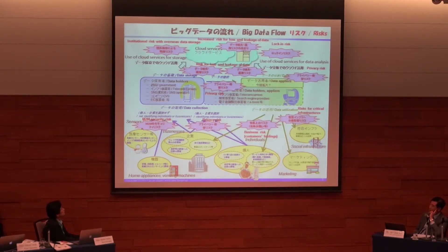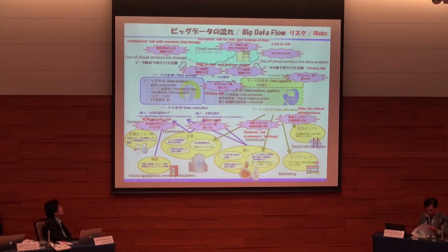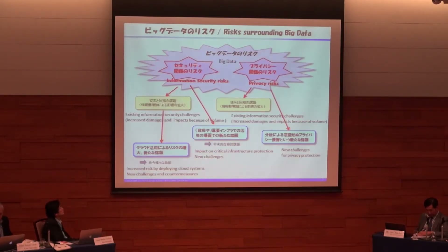Furthermore, by using cloud services for data storage or analysis, risks of data loss or leakage may increase, since basically you cannot directly control your data on cloud systems. This slide summarizes risks surrounding big data. There are mainly two risks: one is risk relating to information security, and the other is risks relating to privacy.